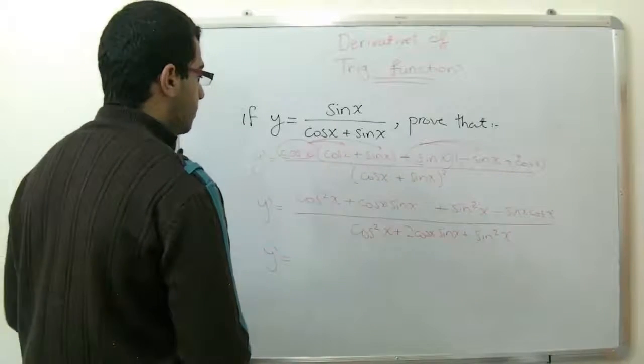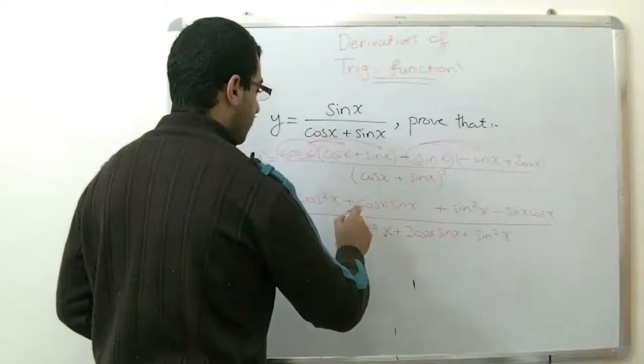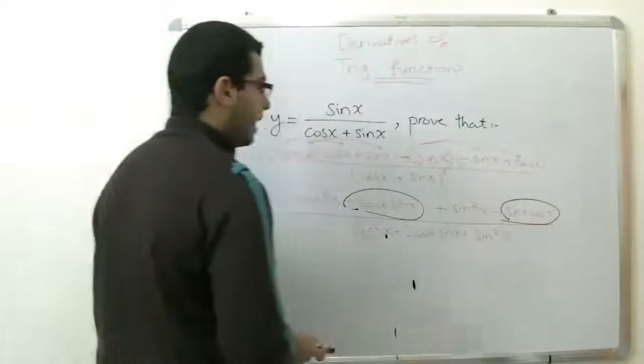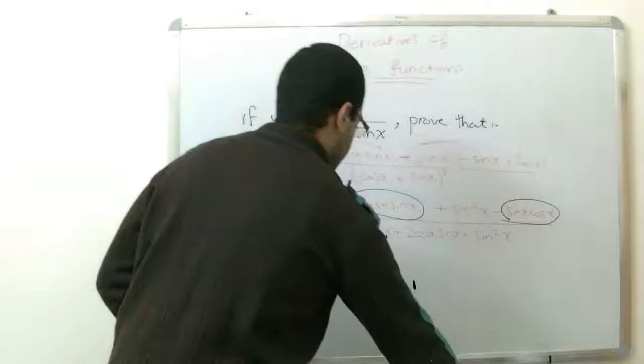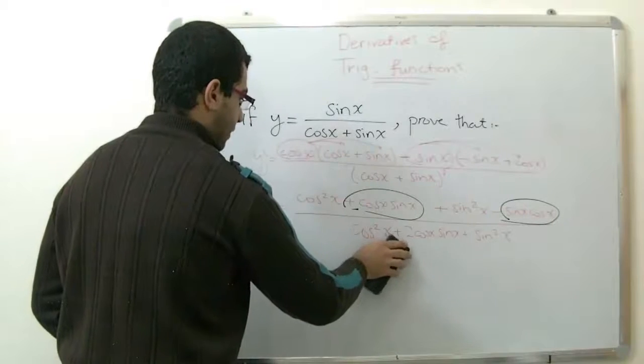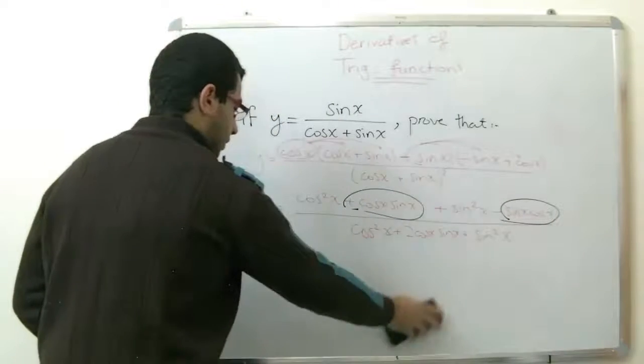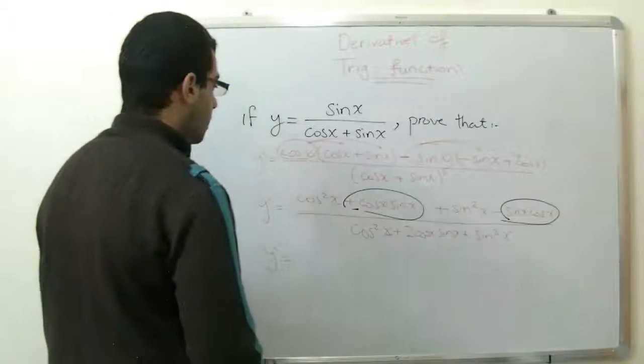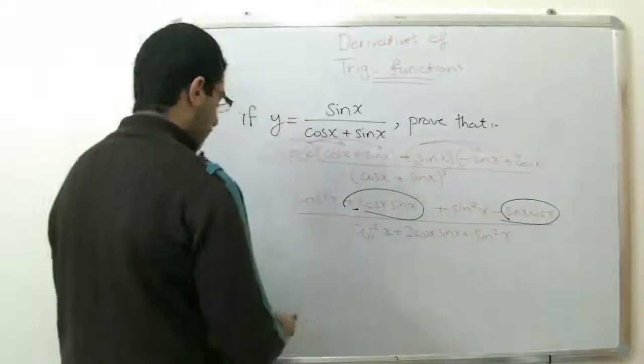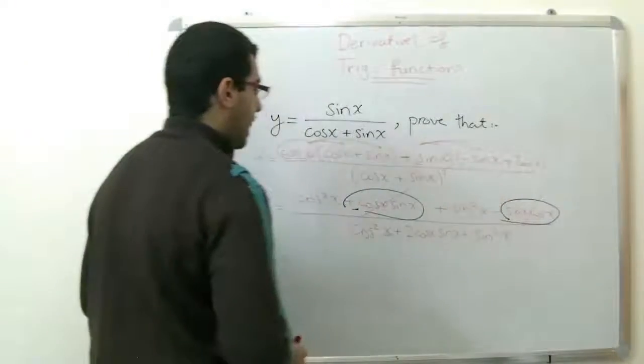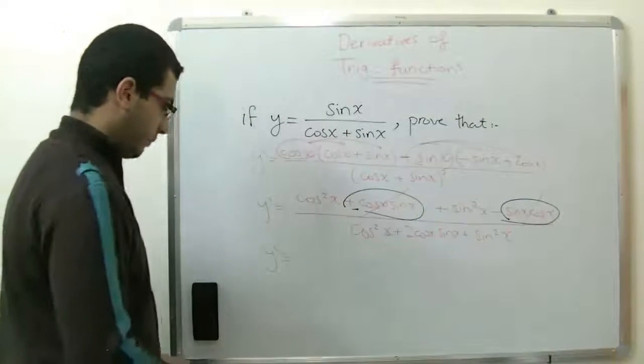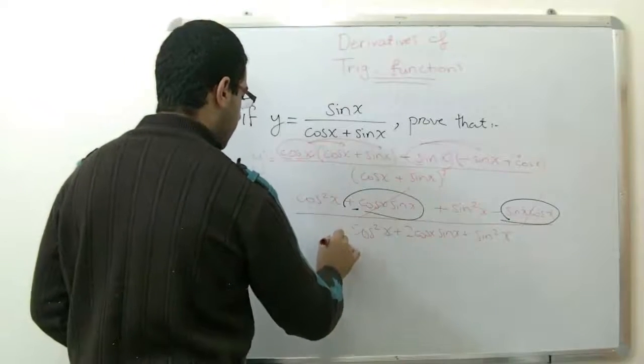We will simplify this expression. So the two terms here are the same. They are the same as we noticed. Those two are the same, this is positive and this is negative, so they cancel with each other, we don't have them. And cosine squared x plus sine squared x, as we mentioned at the beginning of the video, equals 1, so we have here only 1.